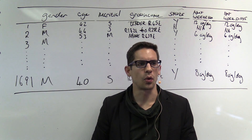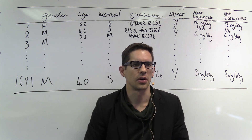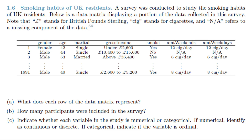In this video, we're going to look at question 1.6, which deals with the smoking habits of UK residents. A survey was conducted to study the smoking habits of UK residents, and the question gives us a data matrix displaying a portion of the data collected. In that table, they give us a symbol for British pound sterling in the gross income column, SIG stands for cigarettes smoked per day, and NA refers to missing data — not available.